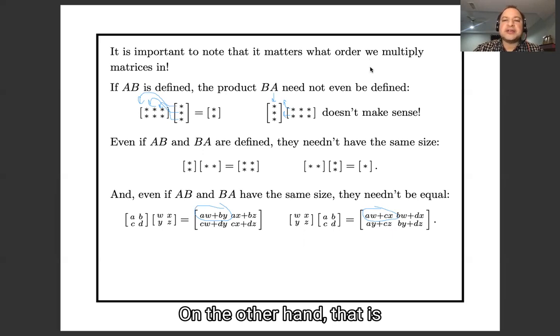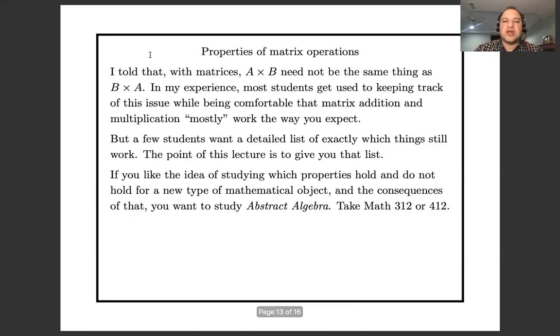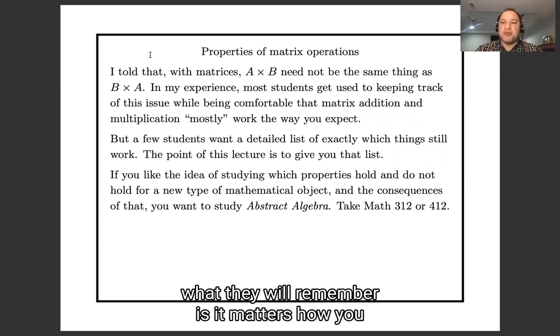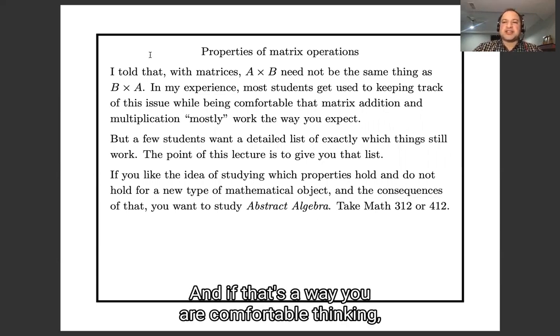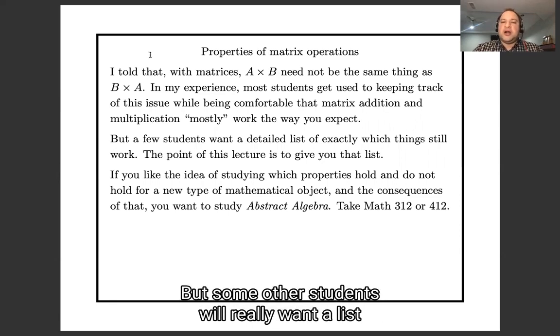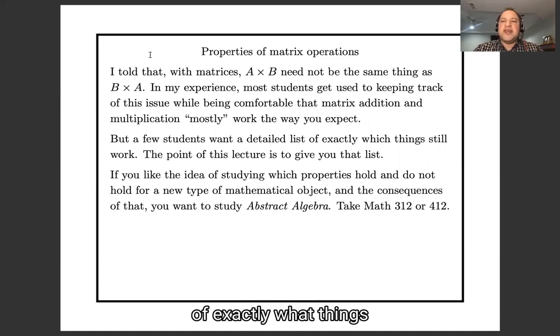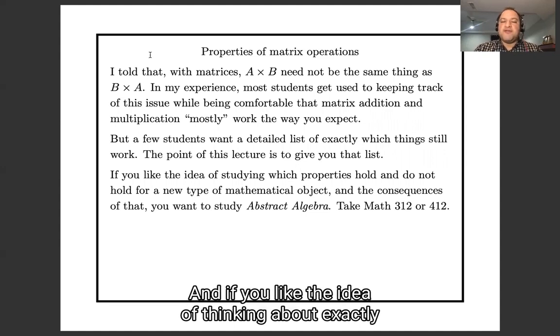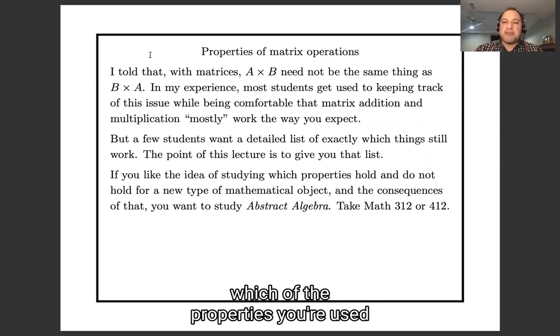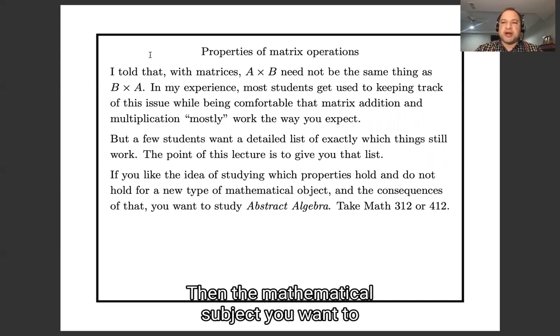On the other hand, that is the only main way that matrix multiplication differs from regular multiplication. So a lot of students, what they will remember is it matters how you multiply - it really is important what order you multiply in, but everything else works about the way you're used to. And if that's a way you're comfortable thinking, I'm okay with you thinking that way. But some other students will really want a list of exactly what things do and do not work the way you're used to. So the next slide is going to give you that list. And if you like the idea of thinking about exactly which of the properties you're used to for ordinary numbers still work or do not work for matrices, then the mathematical subject you want to study is abstract algebra, and you should take Math 312 or 412 - great courses.